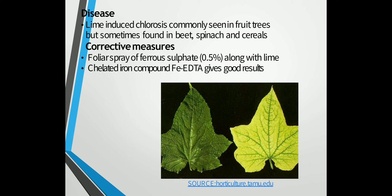It can be corrected by using ferrous sulfate along with lime as foliar spray. The chelated iron compound such as Fe-EDTA gives a very good response for iron deficiency. In the diagram you can see with and without iron the color differentiation in the leaves.